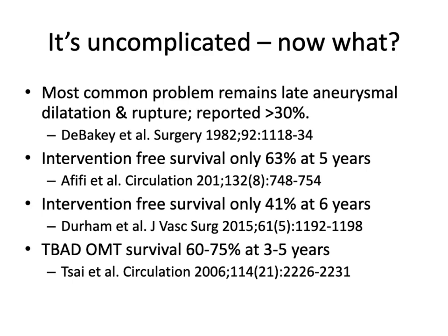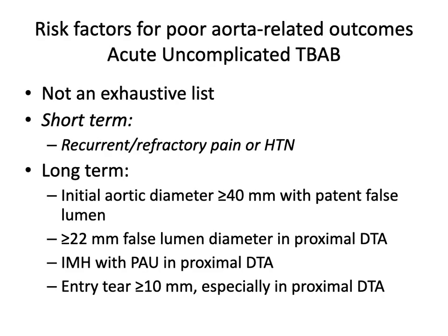A large number of these patients will come to need intervention after surviving the initial episode. There is increasing interest in risk factors for poor aorta-related outcomes after acute uncomplicated type B aortic dissection. Patients with refractory or recurrent pain or hypertension have a higher risk of rupture in the short term. Certain anatomic factors predict poor long-term outcome, and increasingly surgeons will intervene on these patients in the subacute to chronic phase, usually within the first eight to twelve weeks.